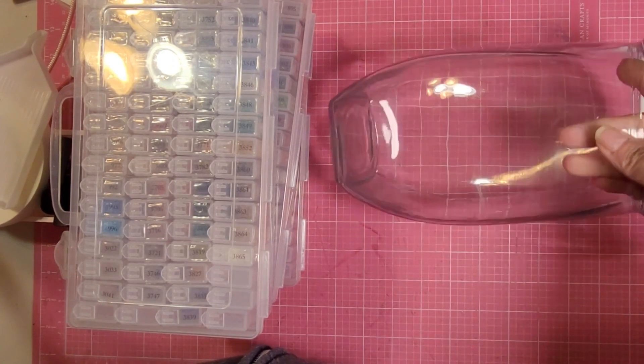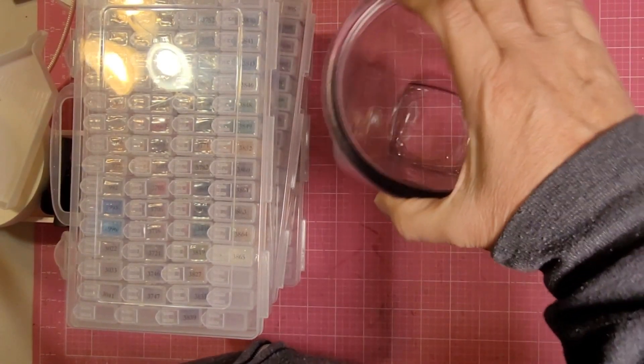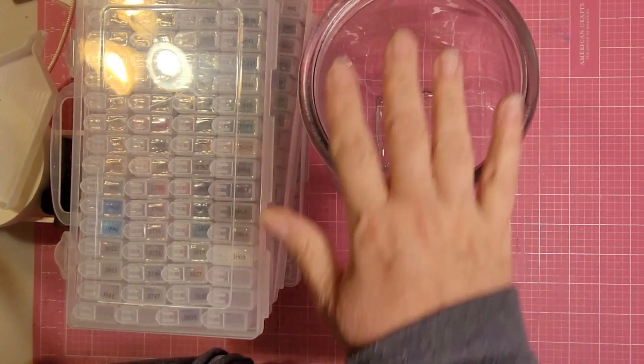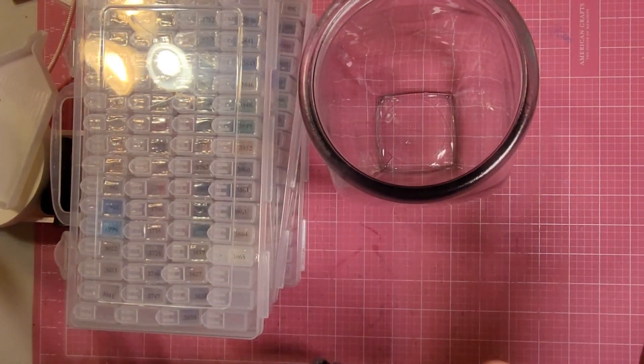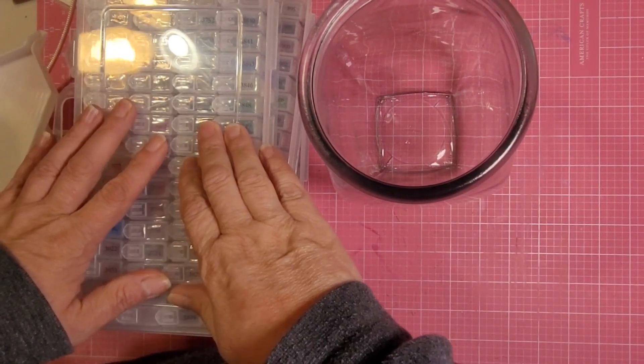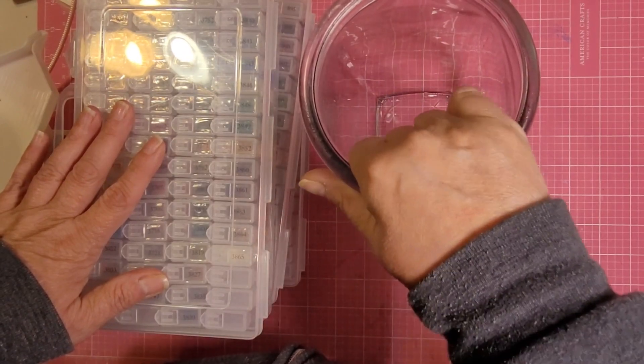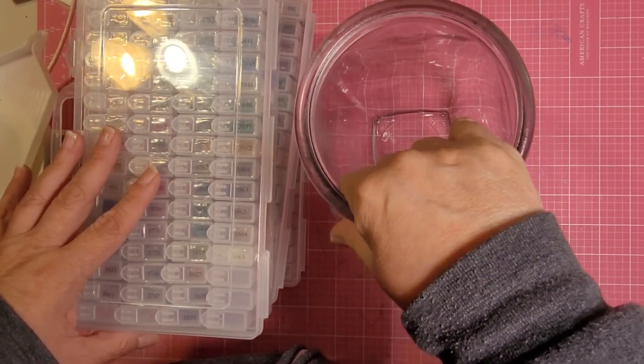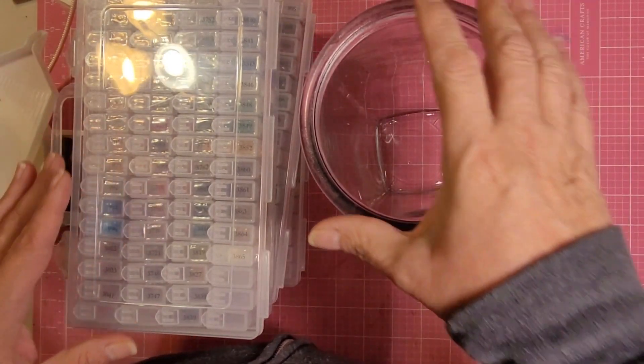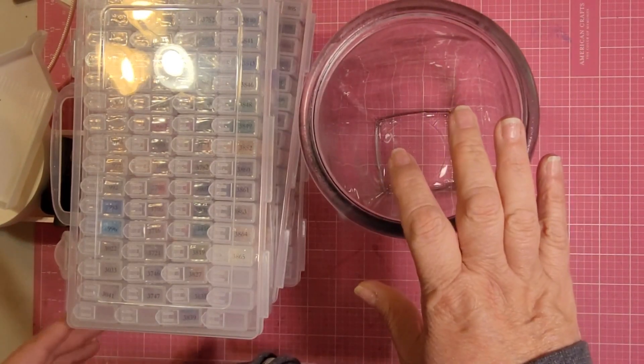So I found this cute little—I don't know if you'd call it a vase or what—but I found it at the dollar store and it was the right color. It was half off. And I am going to pour all of these into here, and then I'm going to continue to add to it. I'll leave this on the corner of my desk.